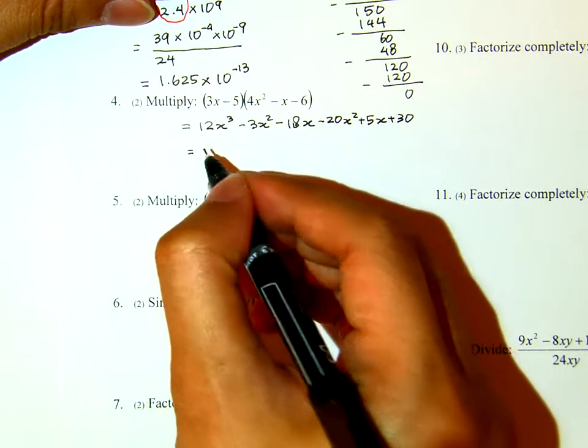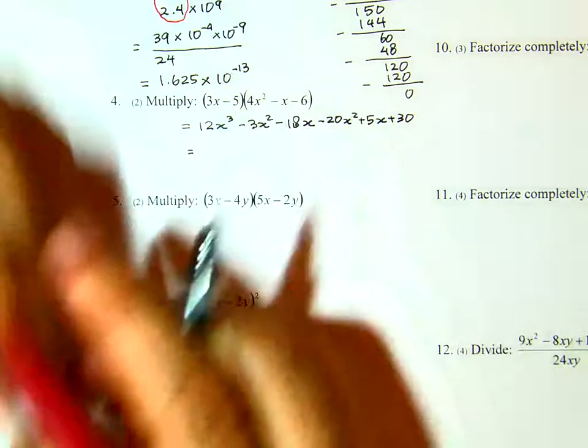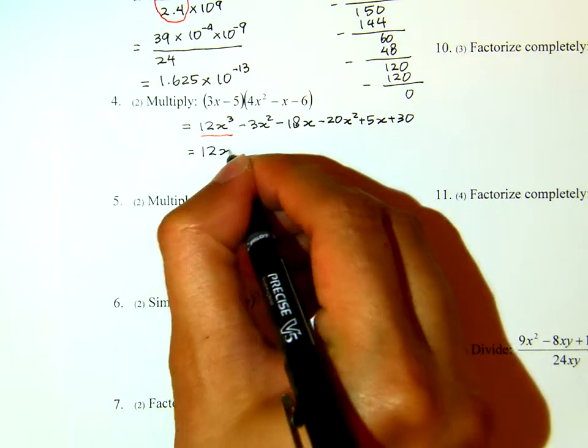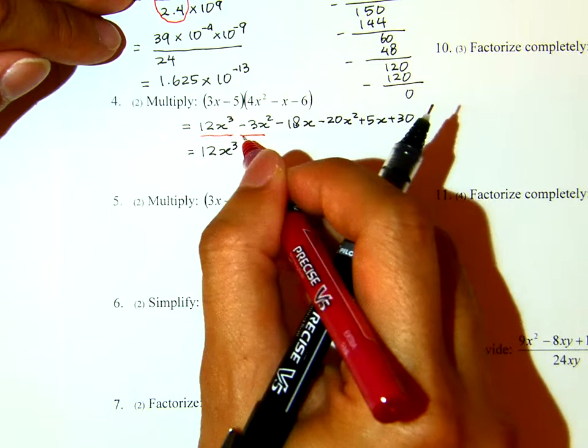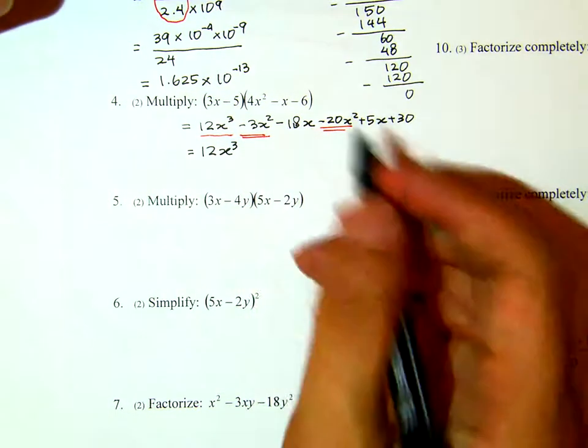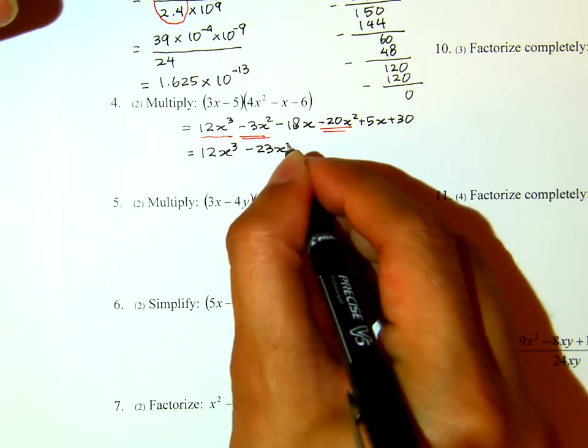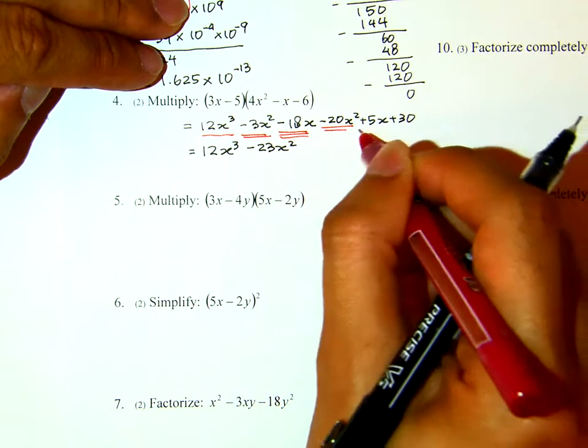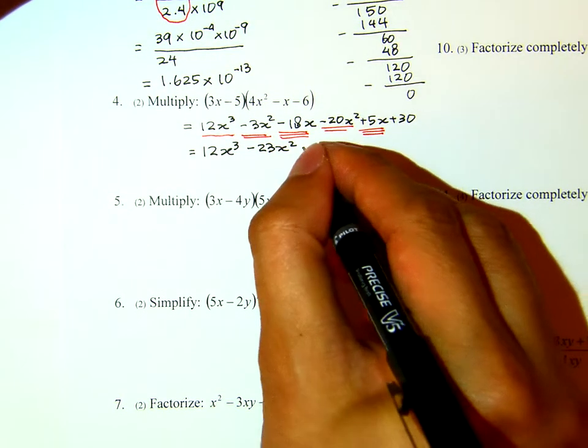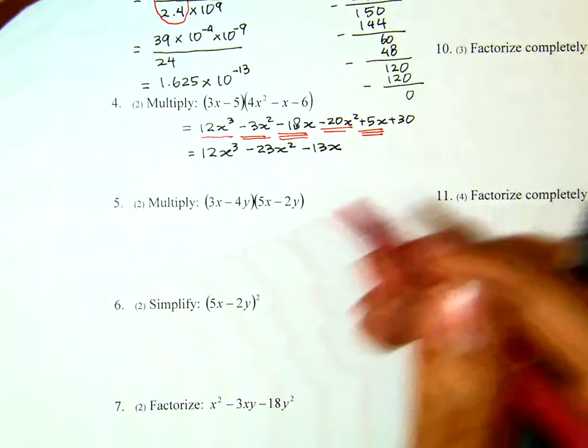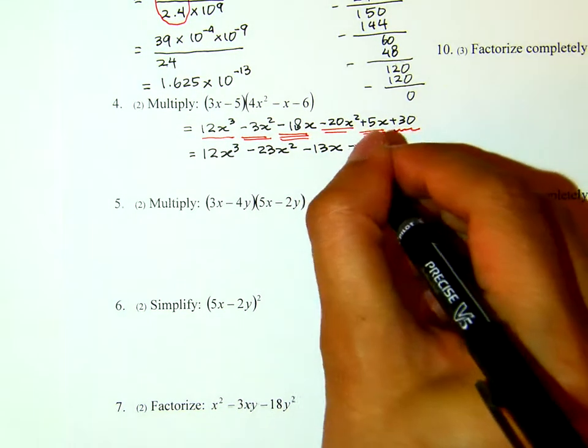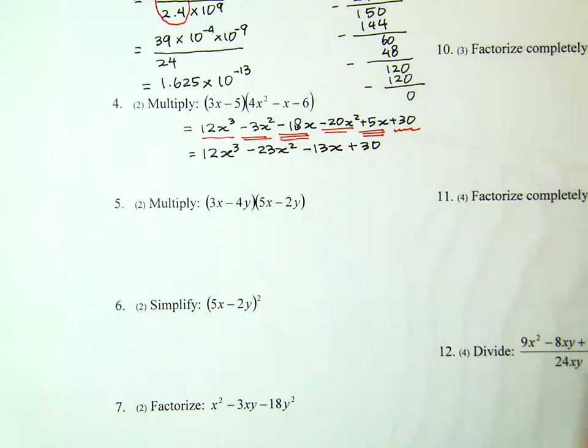What I will do next is combine like terms. The x cubed is by itself, so we have 12x cubed. The x squared, I believe we have 2 terms there, that give us negative 23x squared. For the x terms, we have 2 terms. That will be minus 13x, and finally the constant term by itself, that's plus 30. That's for number 4.